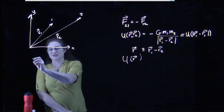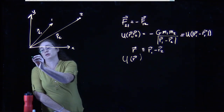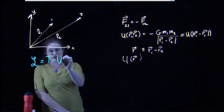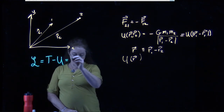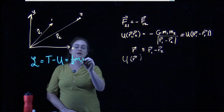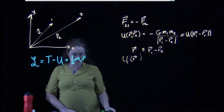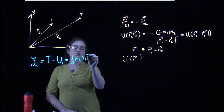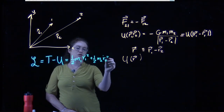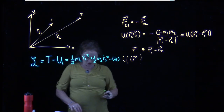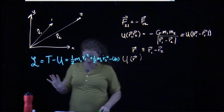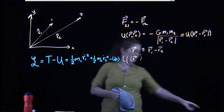The Lagrangian is T minus U, which differs from the energy. For this class of problems, it is one-half M1·R1-dot squared plus one-half M2·R2-dot squared minus U of R. Ignore this if you're not covering Lagrangians yet; if you are, it will make great sense.